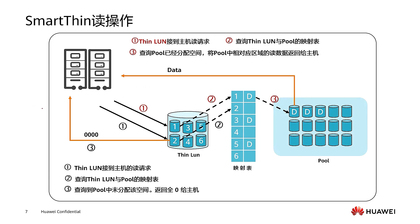Let's analyze the read operations of SmartThin through a diagram. The host sends a request to our ThinLun. After ThinLun receives the request from the host, it will first query the mapping table between ThinLun and the storage pool. This mapping table records the mapping relationship between the logical storage area and the actual storage area. During reading, it queries this mapping table, which can yield two types of results: one where actual physical storage has already been allocated, and one where it has not.